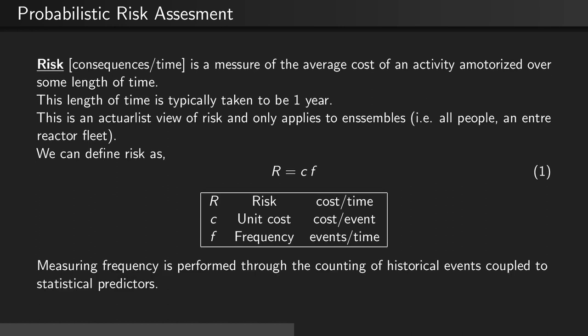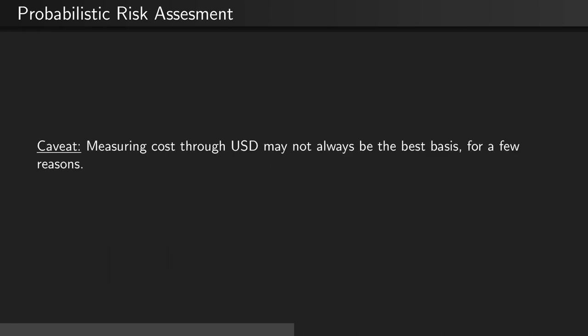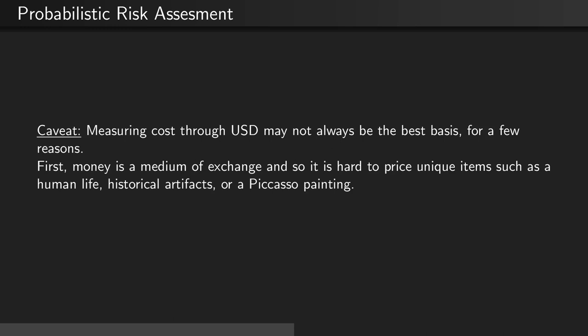Measuring frequency is performed through the counting of historical events coupled to statistical predictors. Cost is often measured monetarily. The major caveat here is that measuring cost through U.S. dollars may not always be the best basis for a few reasons. First, money is a medium of exchange, and so it is hard to price unique items, such as a human life, historical artifacts,